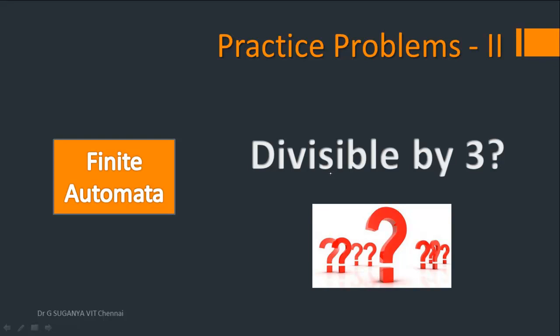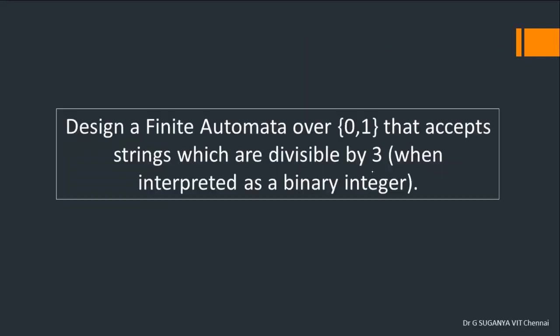A specific kind of design of finite automata, in which the divisibility of a binary string by a particular number, is going to be discussed in this session. We are going to design a finite automata over {0,1} that accepts strings which are divisible by 3, for which we are going to interpret the given input string as a binary integer.